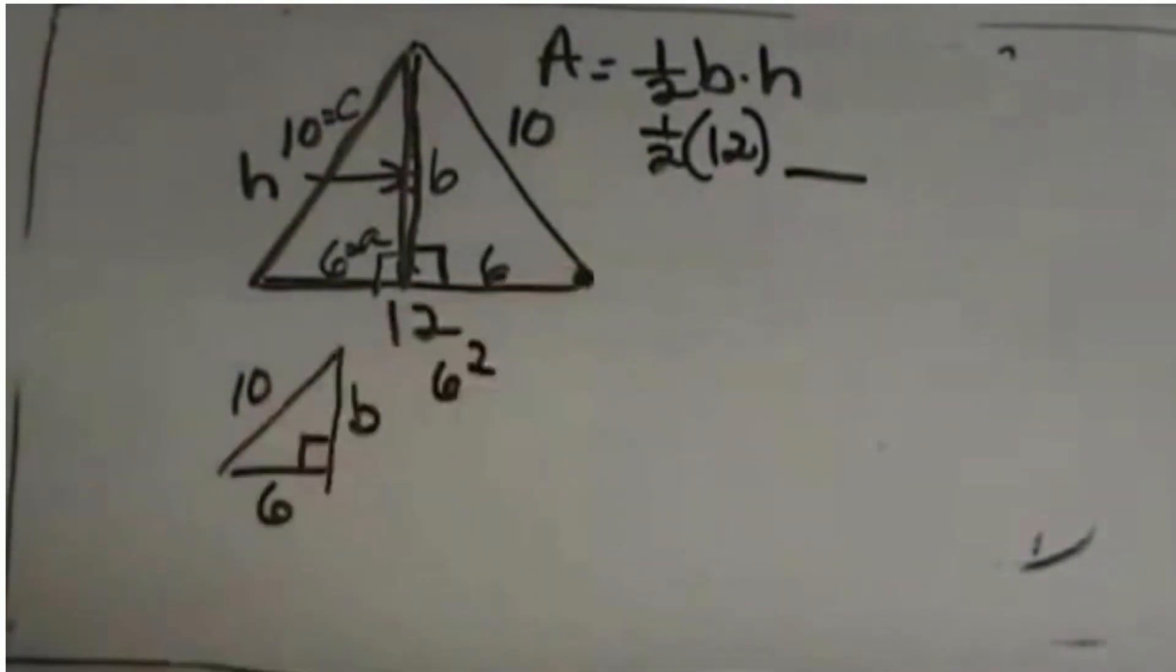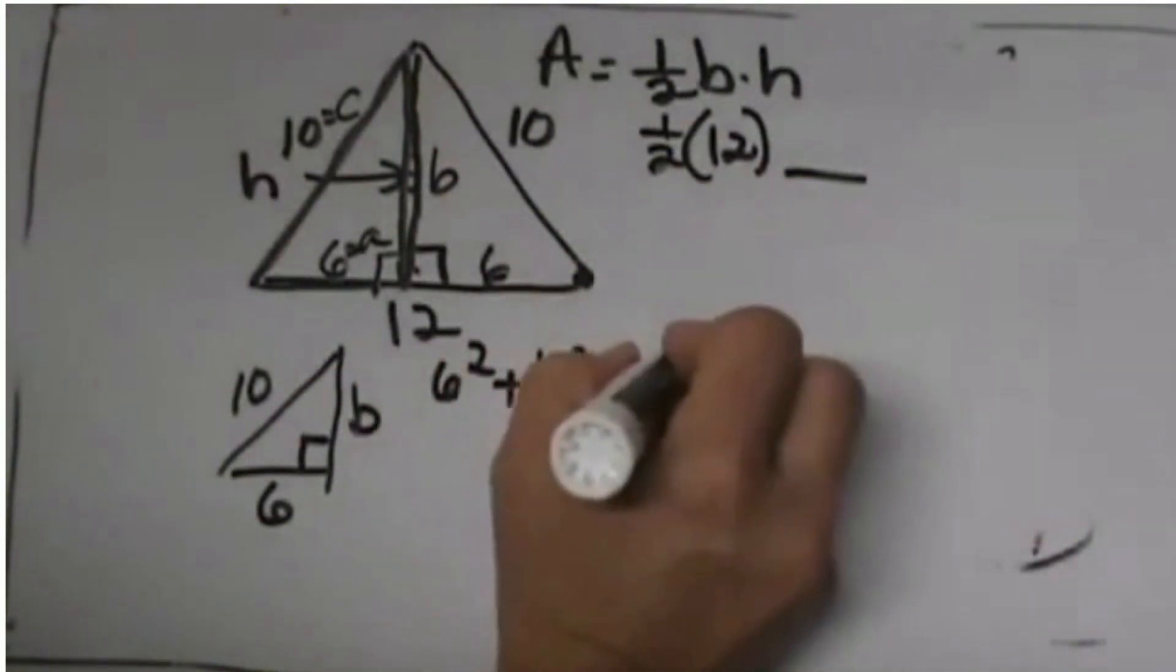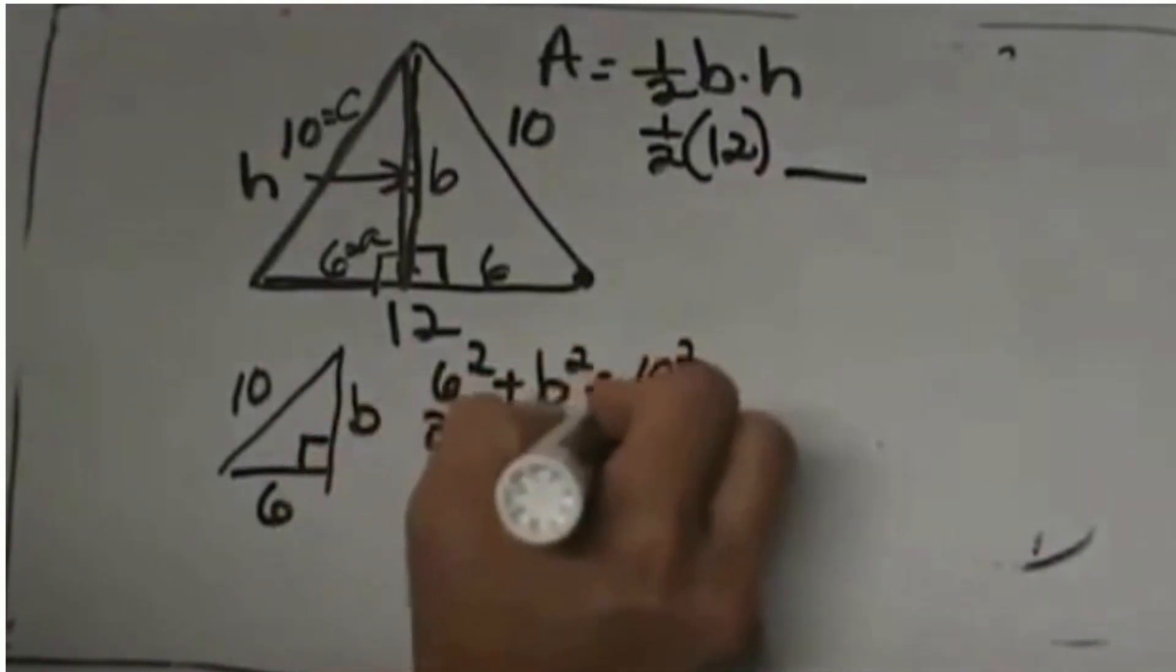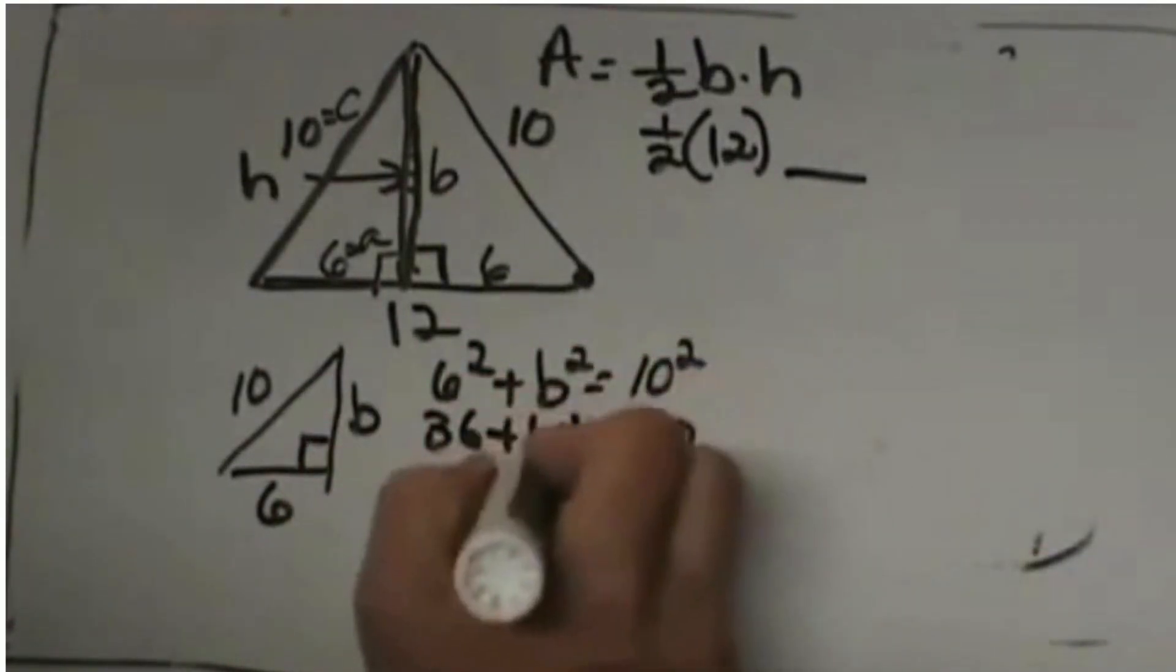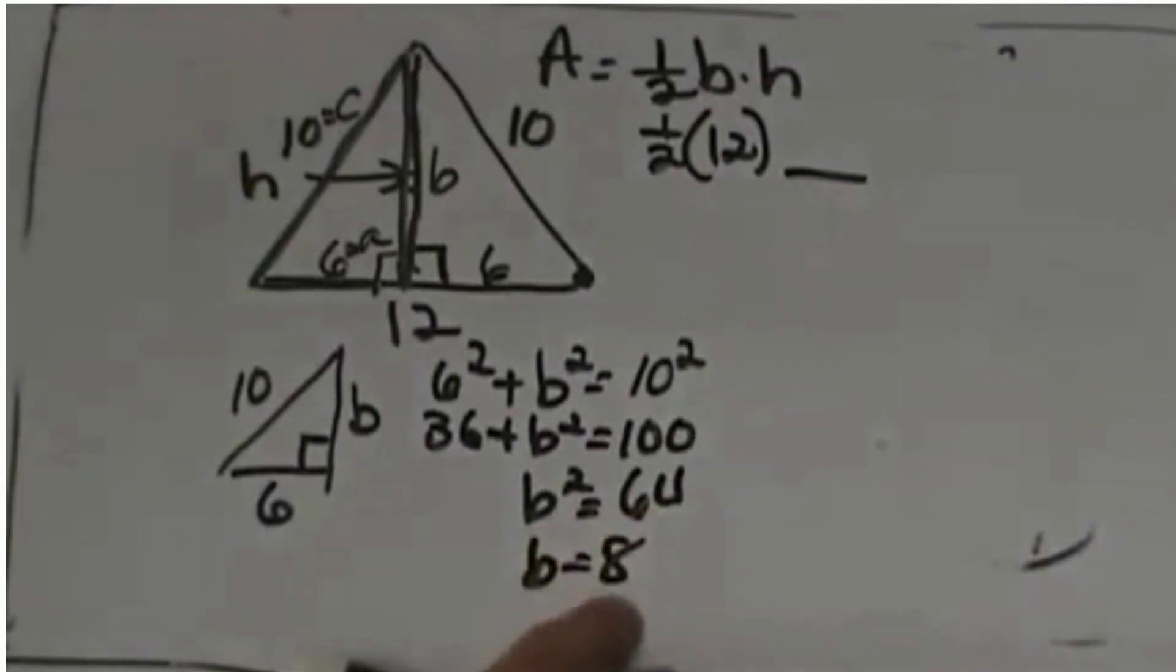So a squared, which is 6 squared, plus b squared equals c squared which is 10 squared. So 36 plus b squared equals 100. b squared, subtract 36 from both sides, is 64. So b is 8. That means our altitude or height is 8.